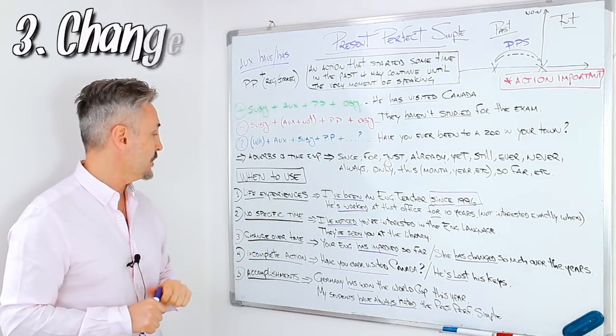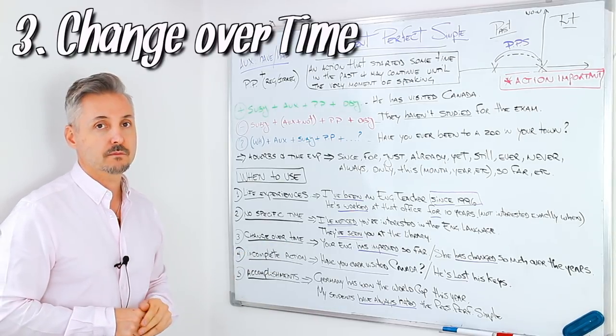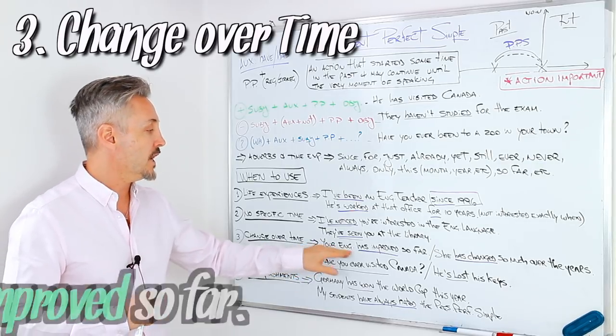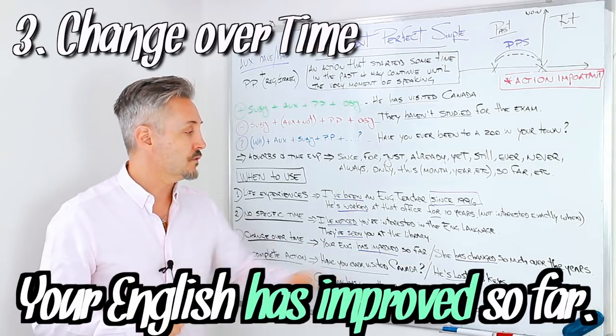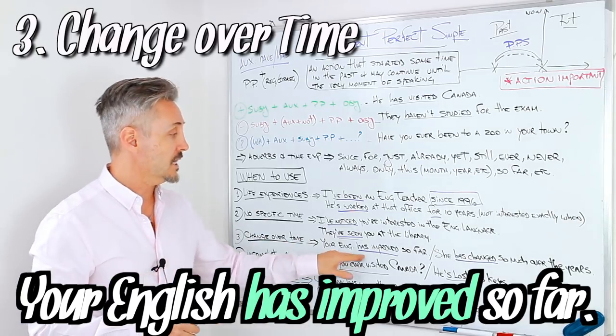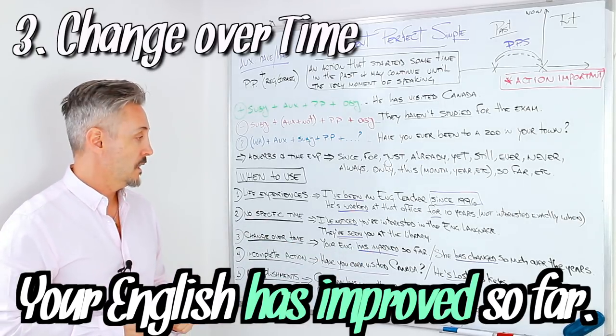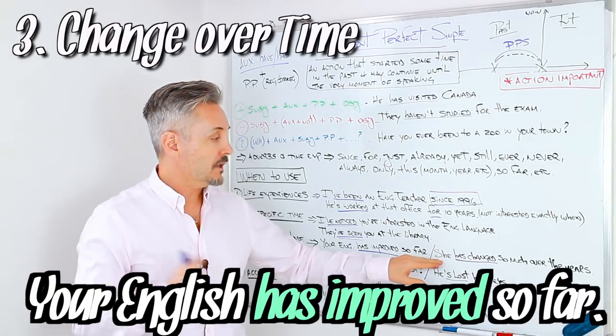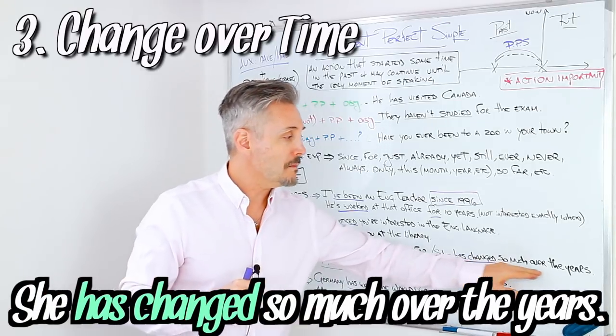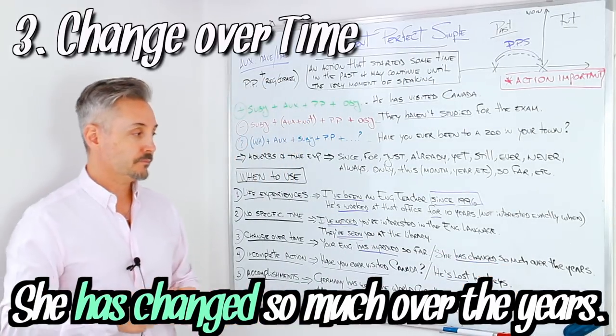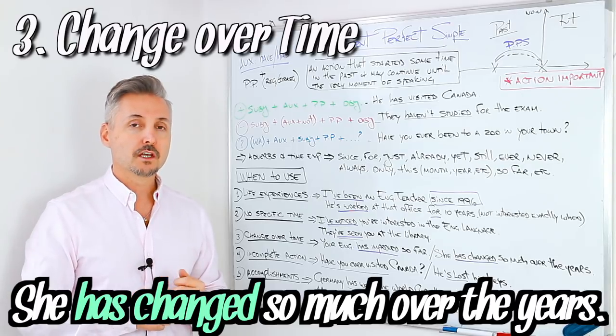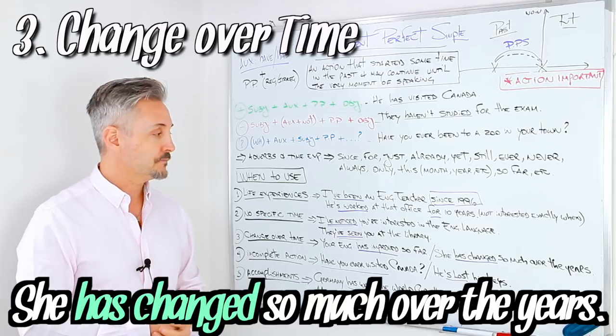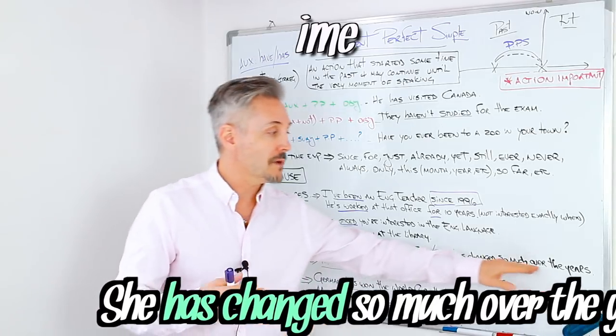Number three: change over time. So when you want to specify a change. Your English has improved so far. So far, your English has improved, has gotten better, for example. Another example: She has changed so much over the years. So when I first met her, she was blonde, then she became brown hair, a brunette. She has changed so much over the years.